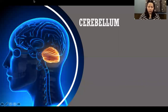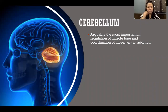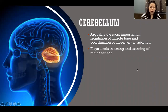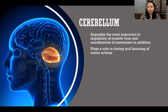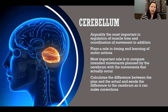Starting with the cerebellum — we started talking about this in the previous video but I'm going to go into a bit more depth here. The cerebellum is arguably the most important structure for regulation of muscle tone and coordination of movement. It also plays a role in timing and learning of motor actions. Its most important role is to compare the intended movements planned by the cerebrum with the movements that actually occur, then calculates the difference and sends it to the cerebrum so it can make corrections.